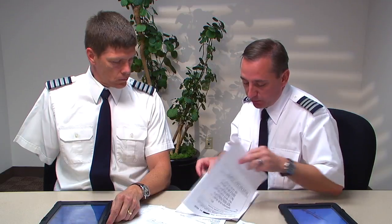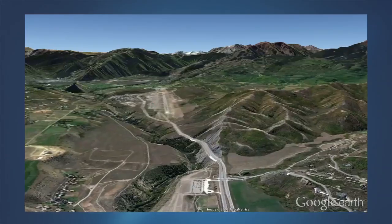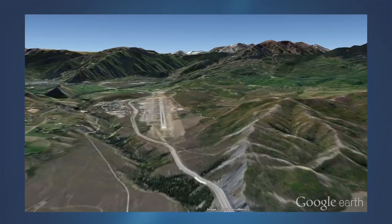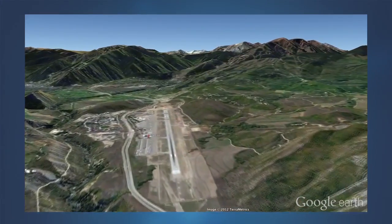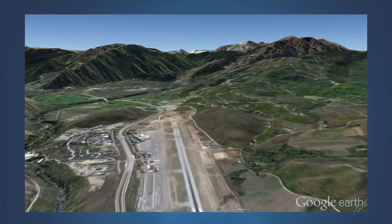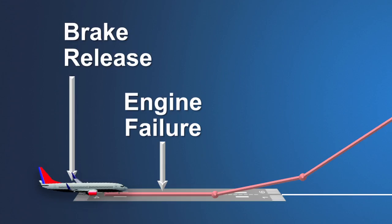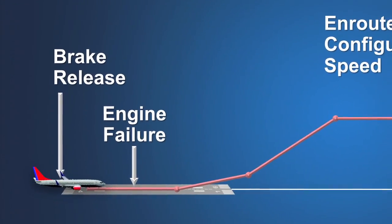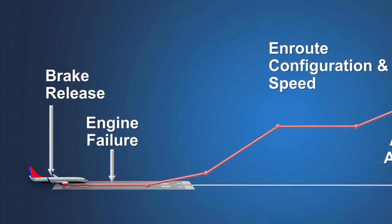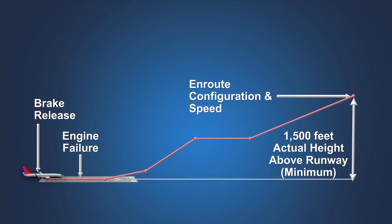This flight crew has accomplished a thorough review of the performance challenges affecting their planned departure from Aspen. Now let's take a moment to examine the challenge of takeoff obstacle clearance and avoidance planning when departing Aspen. A review of the certification rules regarding the takeoff path is a good place to begin our discussion. The certification rules define a takeoff path or vertical profile used to establish both the takeoff climb limit weight and the takeoff flight path for determining the takeoff obstacle limit weight. The takeoff path is divided into a series of segments.